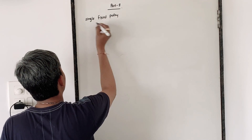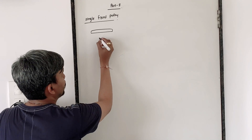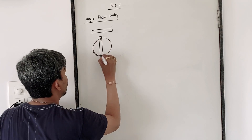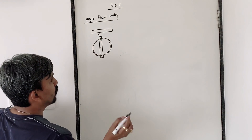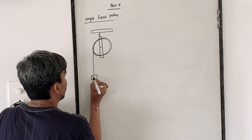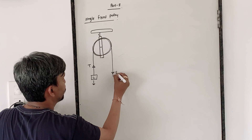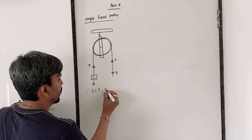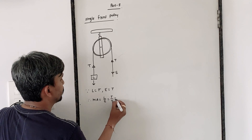Now in a single fixed pulley, this is your rigid support, to which I am attaching this frame. This is the pulley with a double groove in it. This is the center, and this is the hook. I am attaching the load over here with the help of the string. This is the load L acting downward. This is the tension T. Here will be the effort T, and here also tension is T. Now since your load is equal to T and effort is equal to T, therefore mechanical advantage is load upon effort, which is T upon T, which is equal to 1.